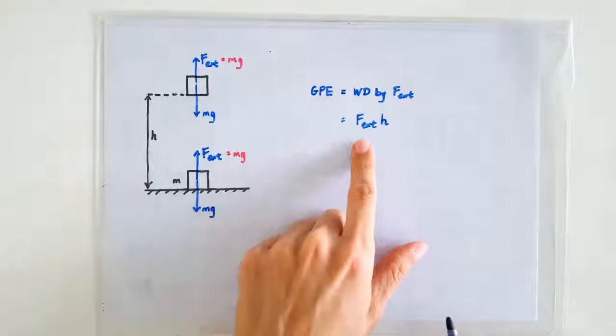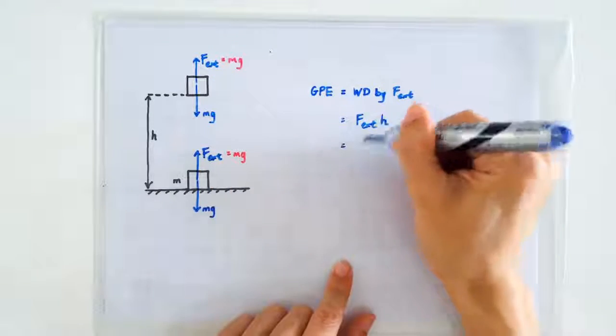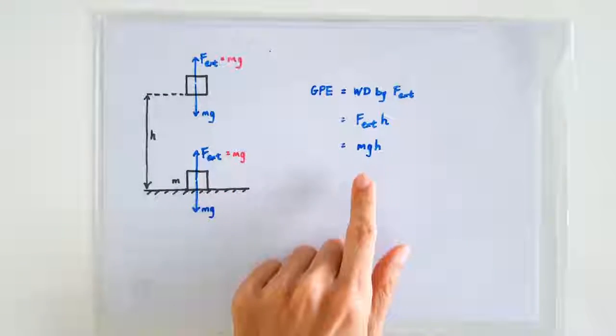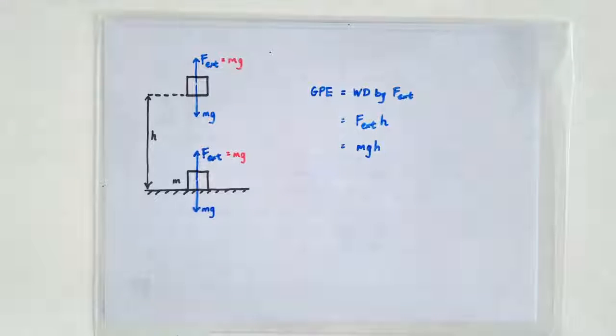And since we have figured out that the external force must be exactly Mg, so there we have it. The GPE ought to be given the formula Mgh. That's all. Take care.